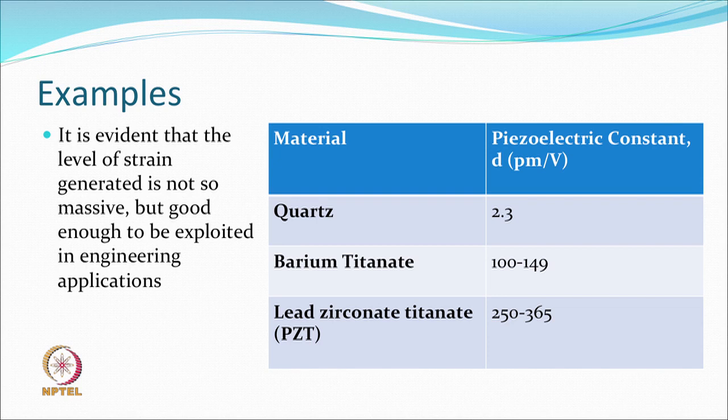The change in dimension per unit voltage is not very significant, but we can still exploit it wherever small displacements are needed — for example, in drop-on-demand type situations where we do not require very large displacement. Similarly, such materials could be used in a transmission electron microscope where you want to raise the stage platform by a few nanometers. There is no other way to raise a platform by a few nanometers other than using these materials. By controlling the electric field — that is, the voltage — you can control the displacement.